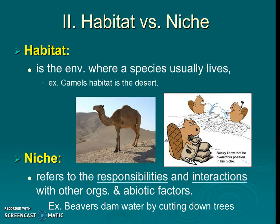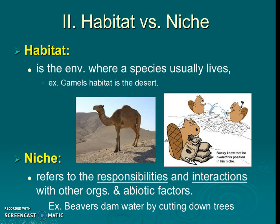We have to know the difference between a habitat and a niche. A habitat is where the species lives, and a niche is the role and responsibilities of the organism's interactions. Just know the difference. If you need to write down an example to remember, go for it. If these are terms you already know, you can skip them.